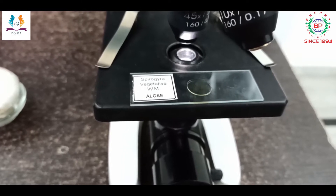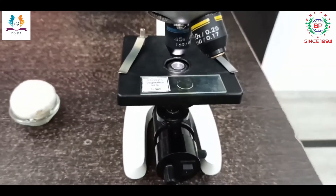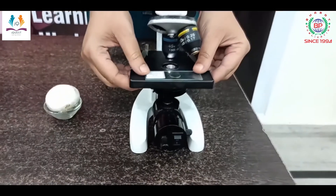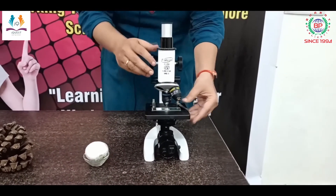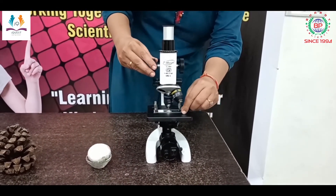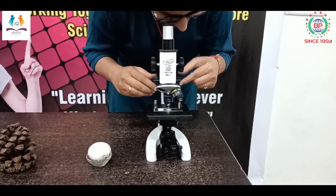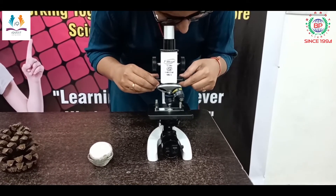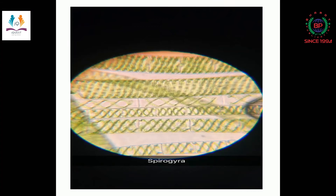First I will explain the structure of Spirogyra. For this I will use a permanent slide and place it on the stage of the compound microscope. I will first do coarse adjustment and then fine adjustment, and you will see a thin, long, unbranched filamentous structure.